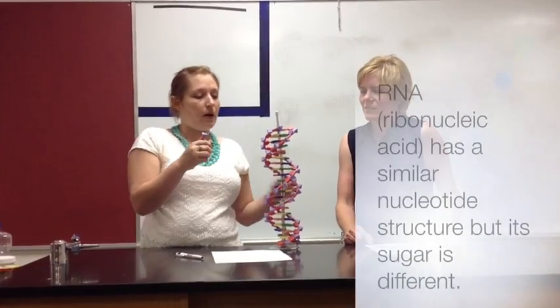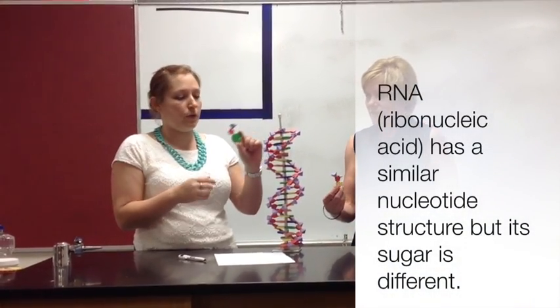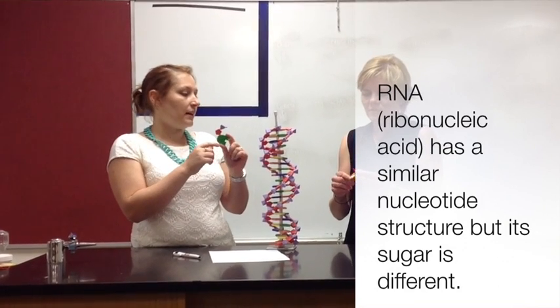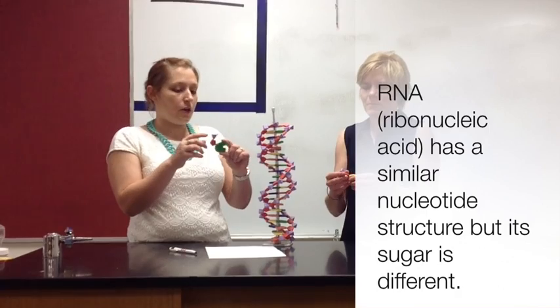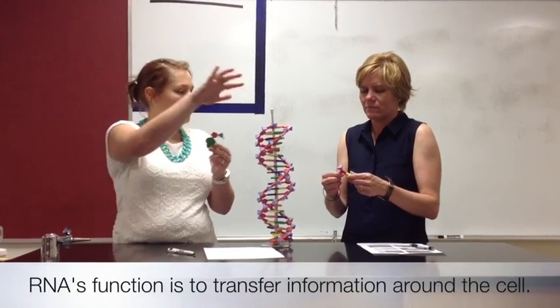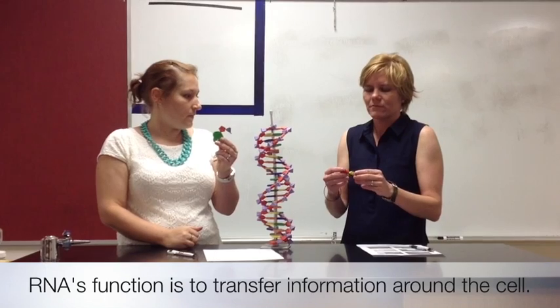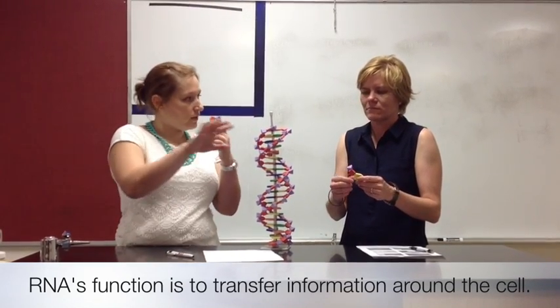Now if we take this apart, and we also switch a couple things around, and we'll talk about that more in a different unit. We have what's called RNA, and it's called RNA partially because it has a different sugar in it. But it still has a very similar structure, and the RNA's job is to transfer the information around. So DNA carries genetic information, RNA transfers it around.